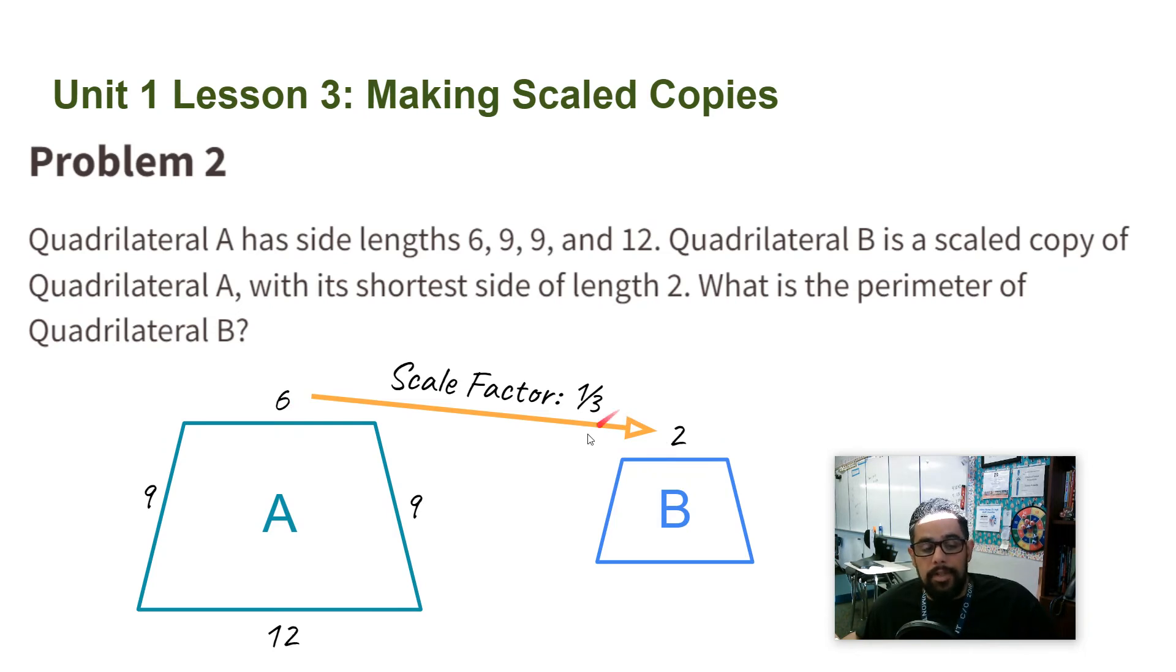With the scale factor, I know that if I do all the other corresponding sides times 1/3, then that's going to give me that side. So now for the other missing sides, I'm going to just multiply by 1/3. 9 times 1/3 is 3. That gives me this side. 9 times 1/3 is 3. And 12 times 1/3 is 4.